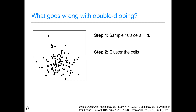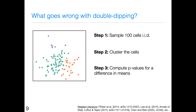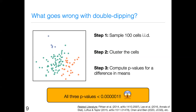Now I'm going to ask: is there a difference between the mean of the green cells and the orange cells? If I compute a p-value corresponding to the answer to this question, I get very small p-values, like 10 to the negative 6. There are three p-values because there are three pairs of clusters — 3 choose 2 equals 3.